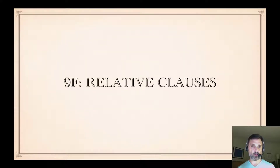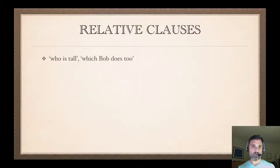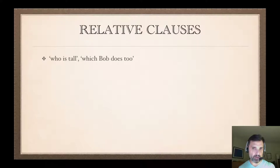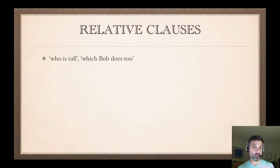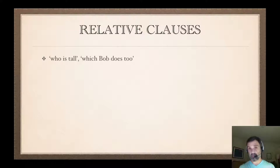In this final brief video, I'm going to discuss relative clauses. A relative clause is a clause like 'who is tall' or 'which Bob does too.' It's a clause, so it's kind of like a sentence, but it has a pronoun in there — the 'who' or the 'which' — which picks up its reference from the broader sentence in which the clause occurs. Therefore, its reference is relative to another part of the sentence.